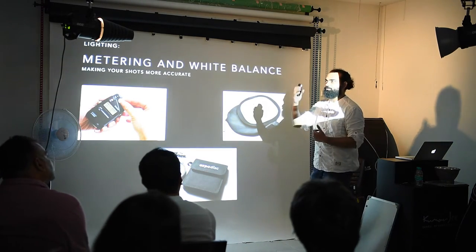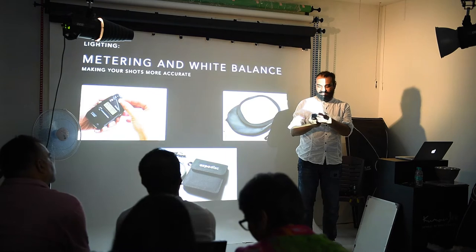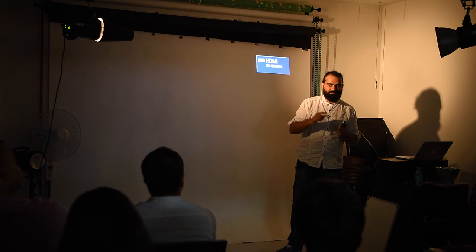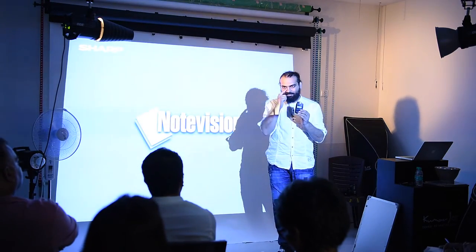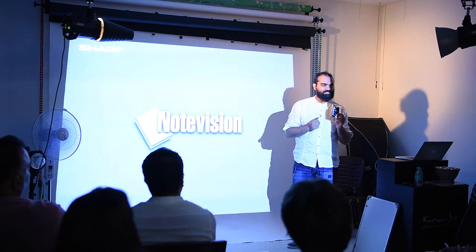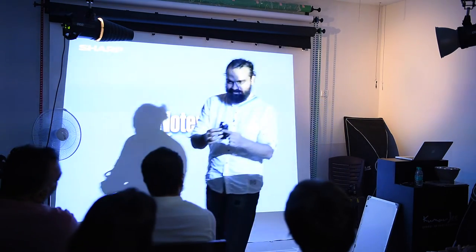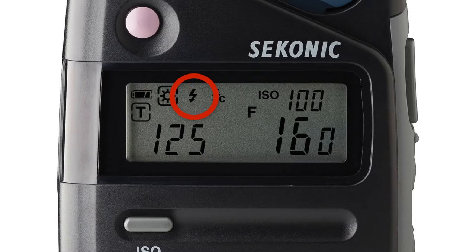Say you want to put a light on a subject — the light is falling here. There's a power button, like every equipment, and there are modes. One mode is called ambient. The modeling lamp is ambient because it's not the strobe. So you can take a reading of the ambient as well. The first option you'll see is something like a Sun icon on the screen — that's ambient.